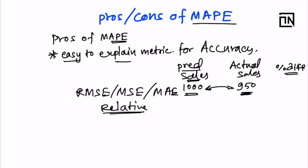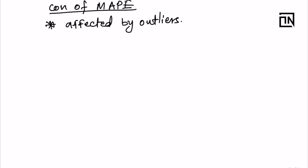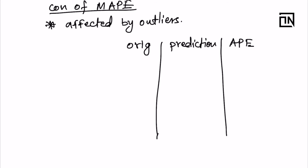What is the drawback of MAPE? MAPE is affected by outliers. Let's take an example: suppose you are capturing some original sales and some predictions and calculating the absolute percentage error. Let's say you committed 2% error here, 5% here, 1% here, 10%, 12%, and so on — and then all of a sudden you see an absolute percentage error of 500%.